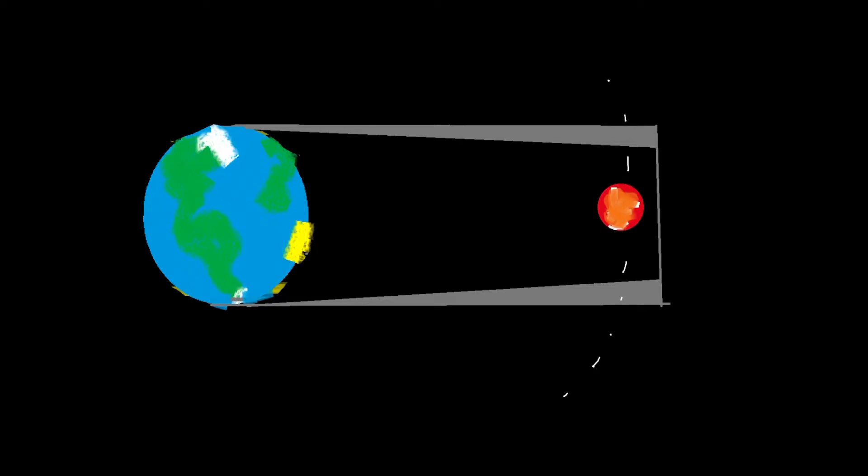One assumption we're going to make is that the total of the Earth's shadow, the umbra and the penumbra, is a cylinder, meaning the diameter of the Earth's shadow is equal to that of the Earth.